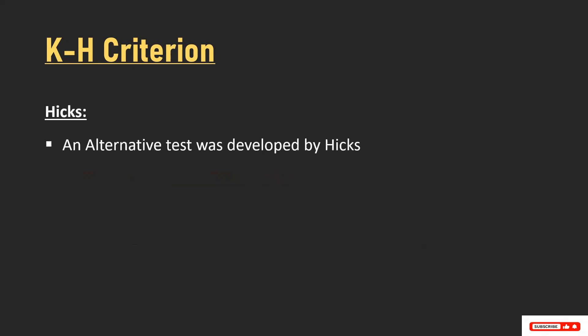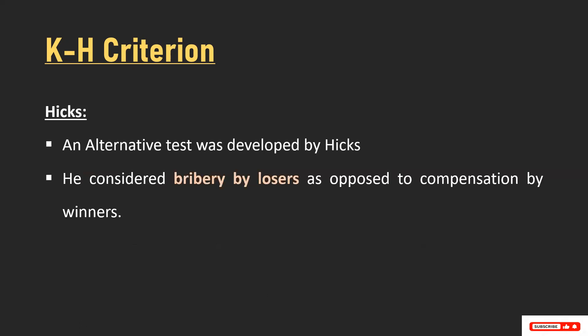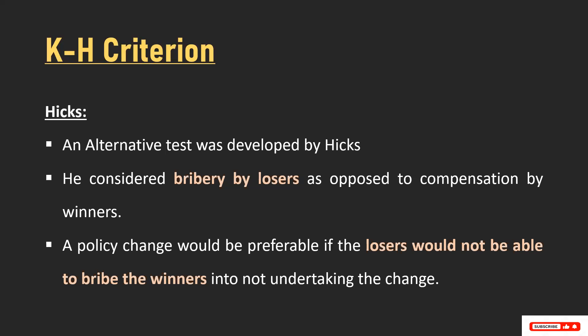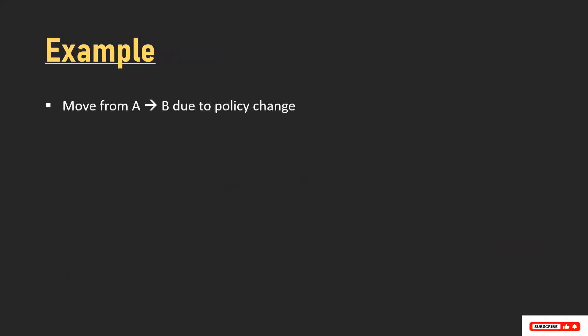Hicks developed an alternative test and considered bribery by losers as opposed to compensation by winners. He says that a policy change would be preferable if the losers would not be able to bribe the winners into not undertaking the change. To understand both criteria, consider this example: suppose we have a move from position A to B due to a policy change. Section X benefits — so they are gainers — and section Y loses, so those in section Y are losers.